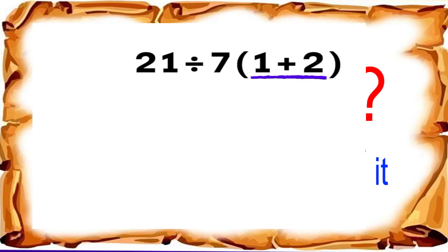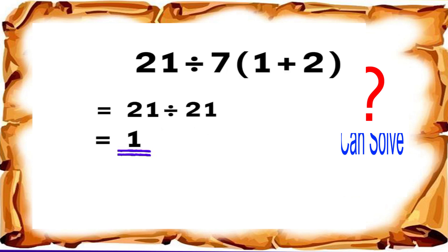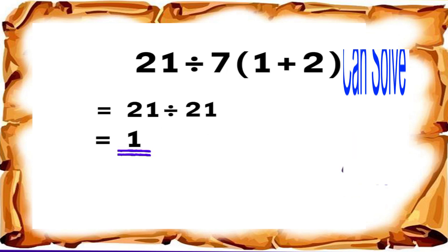You might think one plus two gives us three, seven times three is 21, and 21 divided by 21 should equal one. But that answer is not correct. Here's why.